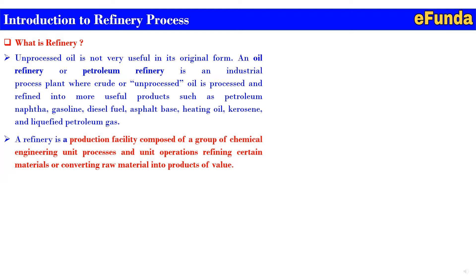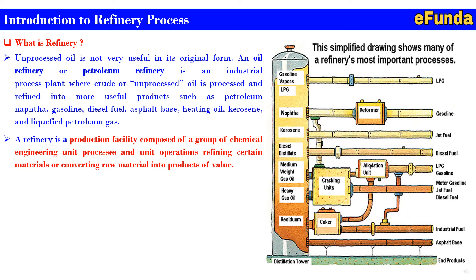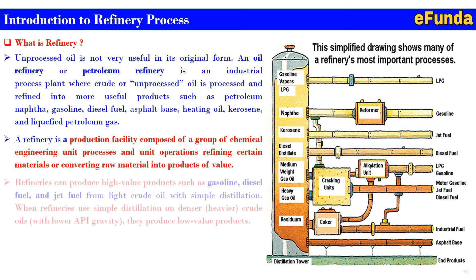A refinery is a production facility composed of a group of chemical engineering unit processes and unit operations refining certain materials or converting raw material into products of value. A simplified drawing shows many of the refinery's most important processes, including the distillation tower and the final end products. Refineries can produce high-value products such as gasoline, diesel fuel, and jet fuel from light crude oil with simple distillation.